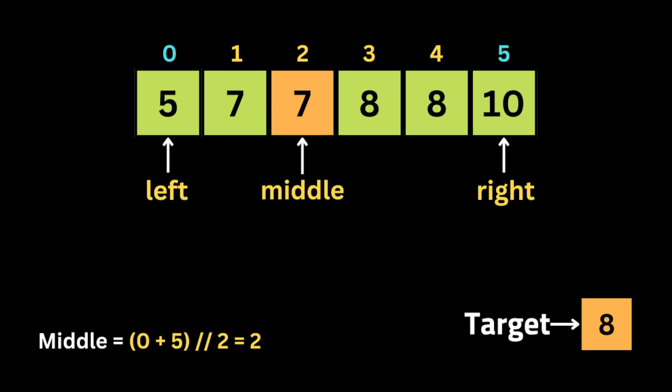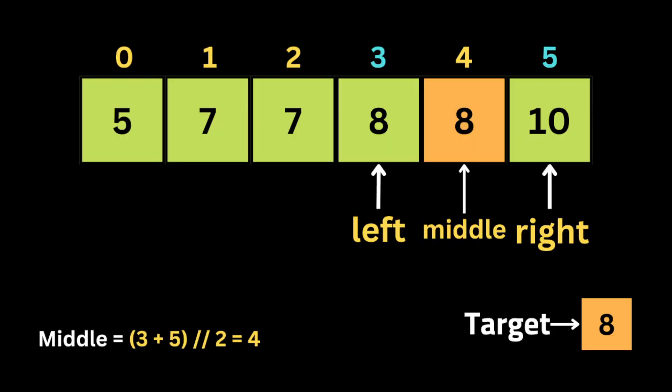Let's use the input array with target eight to demonstrate. We initialize the left pointer at the first integer and the right pointer at the end. We loop while left is less than or equal to right. First, we calculate middle as (left + right) / 2. Since the target is bigger than the integer at the middle index, we move left to start after the middle — eliminating the left half of the array.